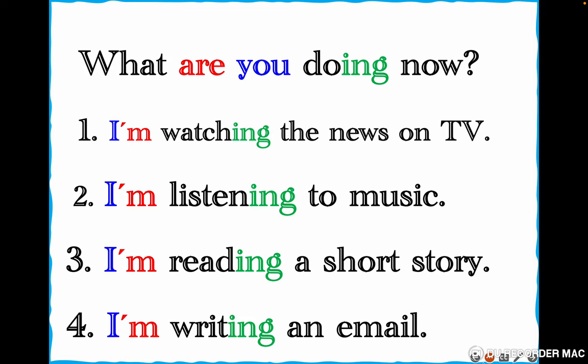In this slide we have one question with four possible answers. 'What are you doing now?' — Now I am watching the news on TV. Now I am listening to music. Now I am reading a short story. Now I am writing an email. Note: writing 'now' or not is the same, because 'am' plus verb plus -ing already means present continuous — it means now. Let's repeat: 'What are you doing now?' — I am watching the news on TV, I am listening to music, I am reading a short story, I am writing an email.